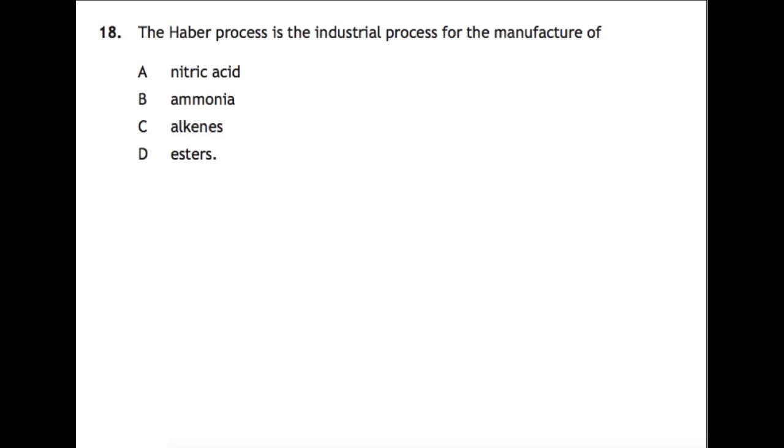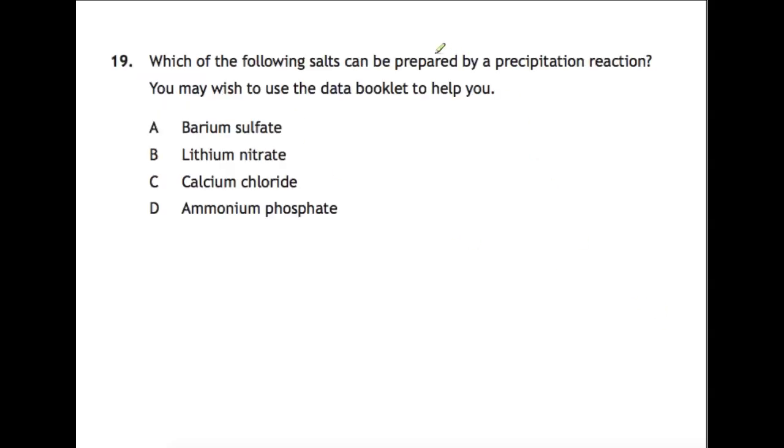The Haber process is an important industrial process that you learn about and you need to know what it forms, and it forms ammonia, which is B. Which of the following salts can be prepared by a precipitation reaction? You may wish to use your data book to help you. You want to look at page 8 where you have the table where it shows if things are soluble or insoluble. The only one which is insoluble is barium sulfate A.